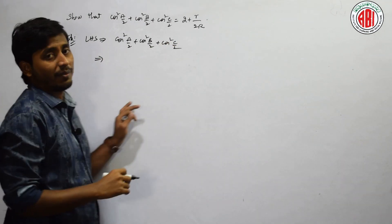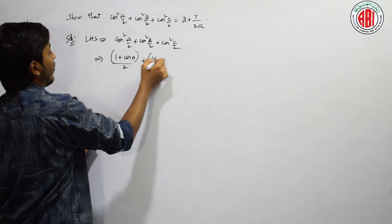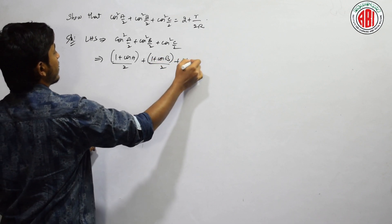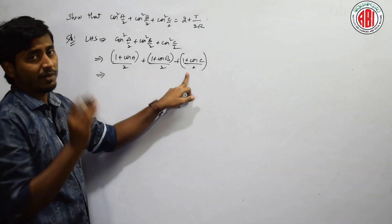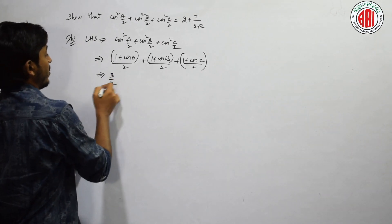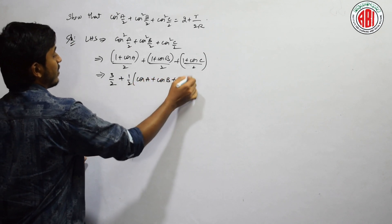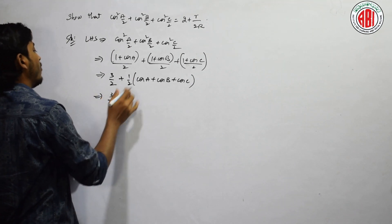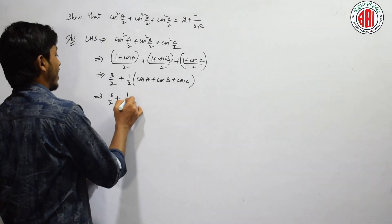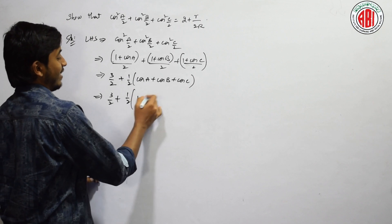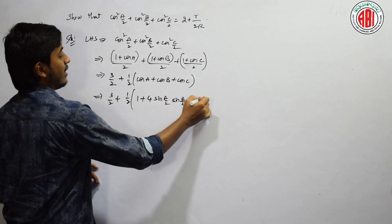What is the formula of cos²(A/2)? It is (1 + cos A)/2. So we get (1 + cos A)/2 + (1 + cos B)/2 + (1 + cos C)/2. Taking 1/2 outside from each term: 1/2 + 1/2 + 1/2 = 3/2, and the remaining part is (1/2)(cos A + cos B + cos C). Now, cos A + cos B + cos C equals 1 + 4·sin(A/2)·sin(B/2)·sin(C/2), which we discussed in the last session.